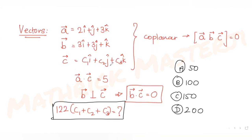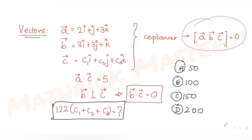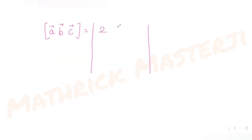For the third equation, we use the fact that the scalar triple product equals zero. This means the determinant of the coefficients of all three vectors equals zero. Setting up the determinant with rows [2, 1, 3], [3, 3, 1], and [c1, c2, c3] and equating to zero gives us a third equation.